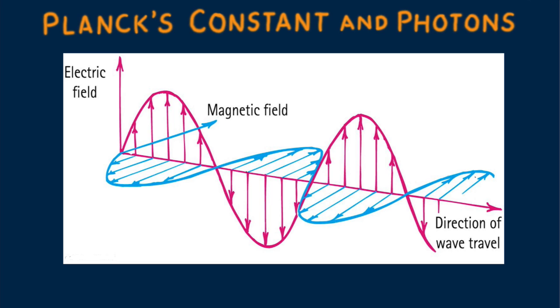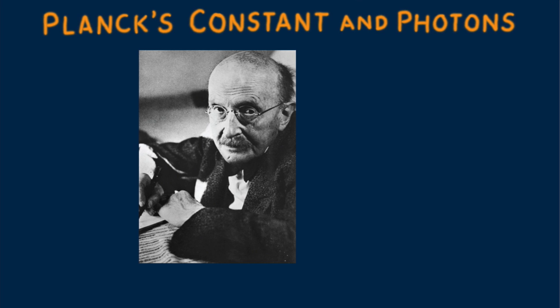A turning point occurred in 1900 when German physicist Max Planck hypothesized that radiant energy was emitted and absorbed in discrete bundles, each of which he called a quantum.